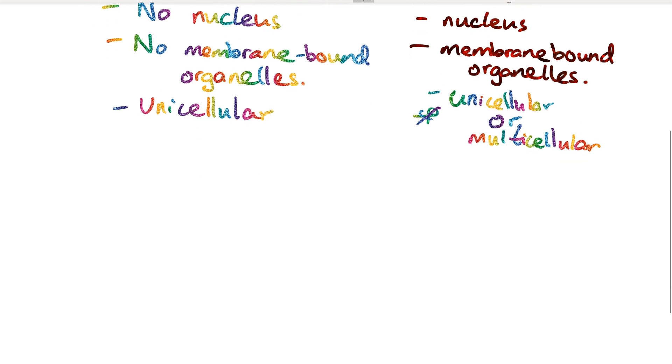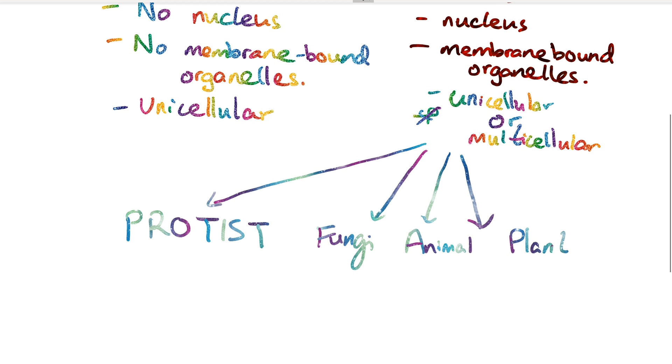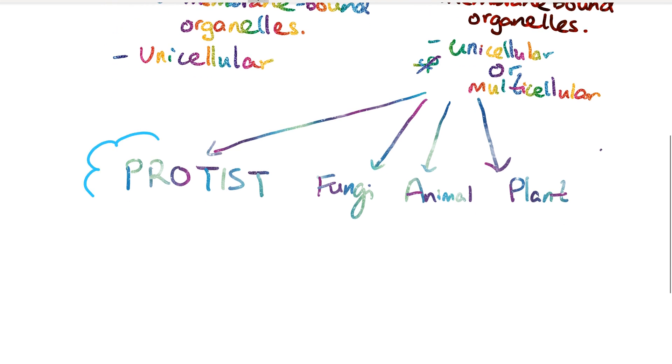Within the domain of Eukarya, there are four kingdoms: protists, fungi, animalia, and plantae. They all have eukaryotic cells, so all eukaryotic cell properties can be found in protists, fungi, animal, and plant cells. We're going to focus on protist cells.